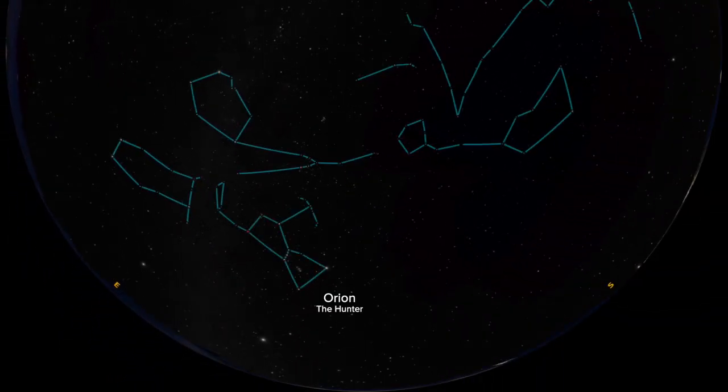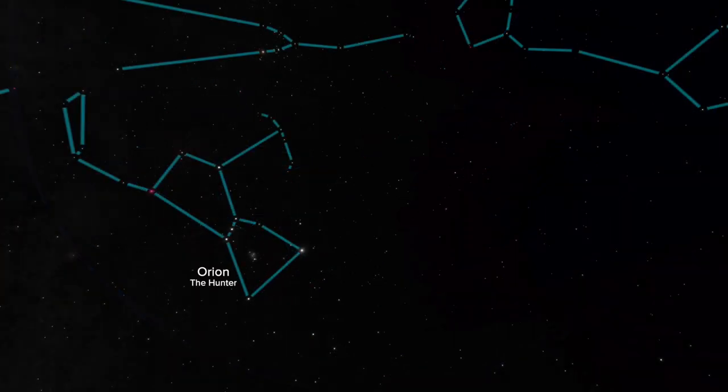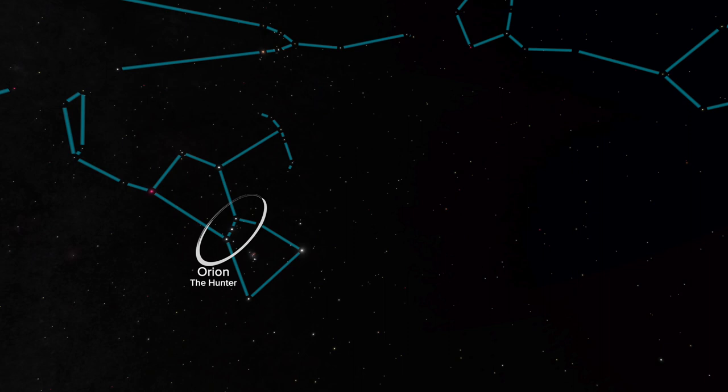Just to the right of the twins is Orion the hunter, who we briefly met last month, and is easily identified with the three stars in a row that make up his belt. Below his belt is what's called the sword.